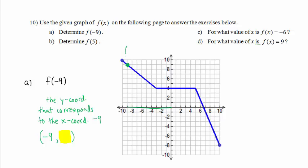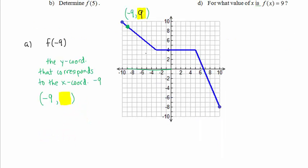This point right here has x-coordinate negative 9. What is its y-coordinate? Its y-coordinate is positive 9, and positive 9 is the answer. That is, f of negative 9 equals 9.